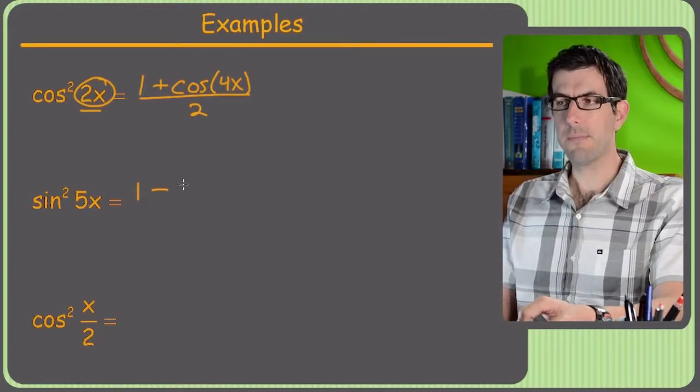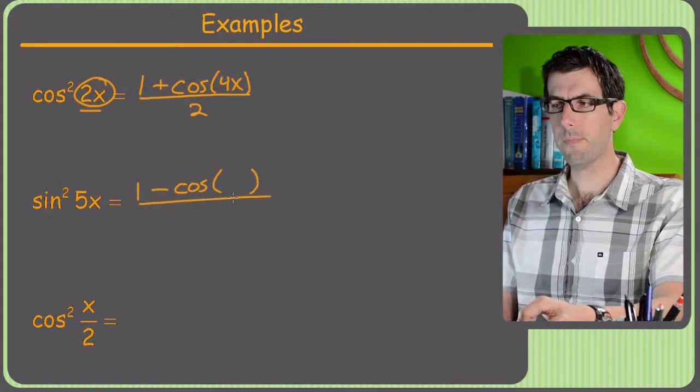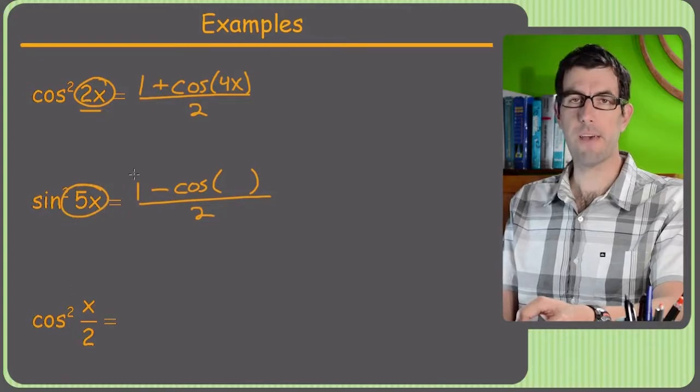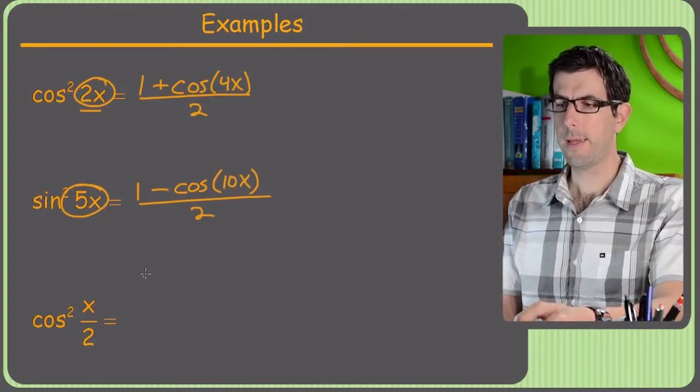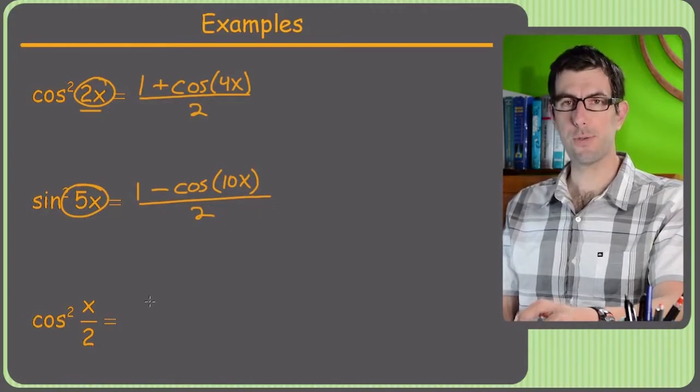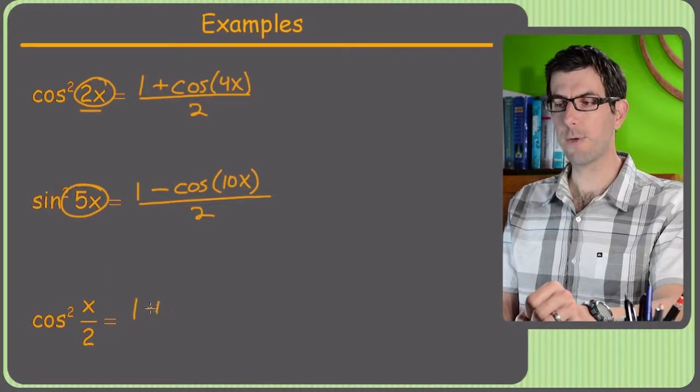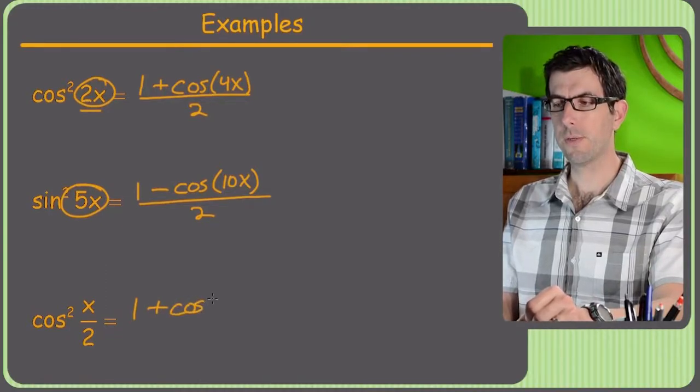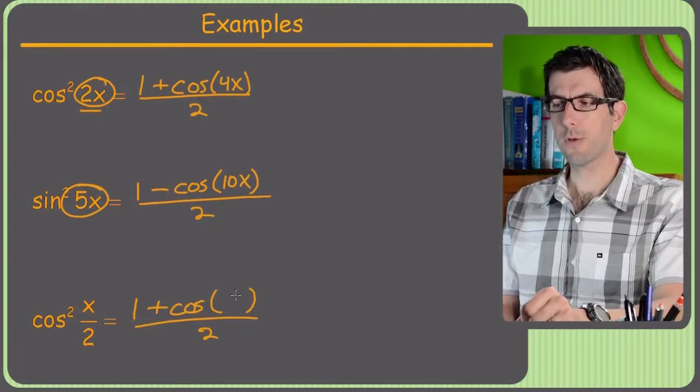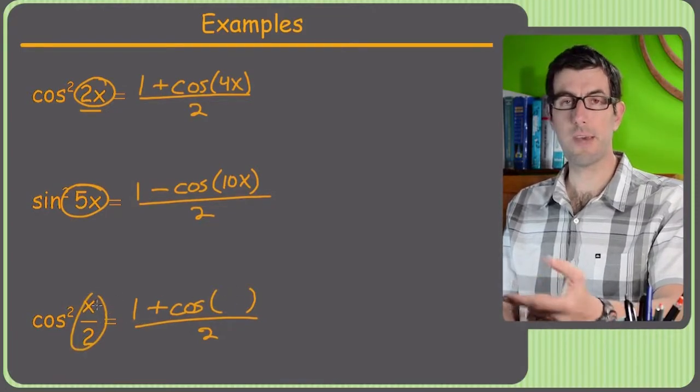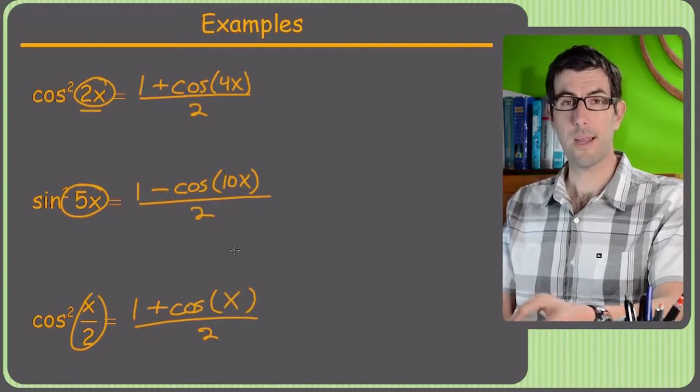So once again, I got 1. Only this time, it's a minus. Cosine of something over 2. And then since this is a 5x, I've got to put double that here, which is 10x. And cosine squared x over 2 looks a little trickier because we've got the over 2. Once again, cosine leads to a positive sign. So it's a cosine of something over 2. And what goes in here is just double this, right? So if you have x over 2, you double that and you just get x.